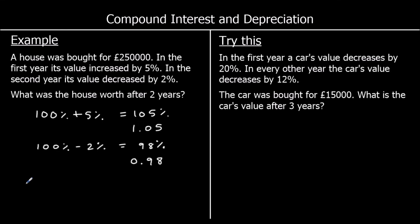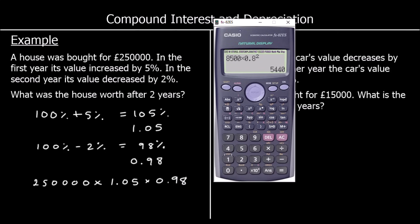So we're going to start with £250,000, multiply by 1.05 for the first year, then multiply by 0.98 for the second year. Let's grab the calculator: 250,000 times 1.05 times 0.98, which gives £257,250.